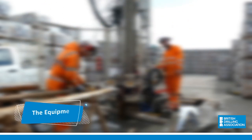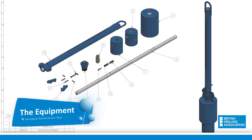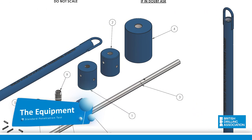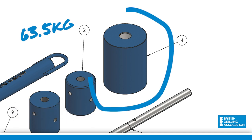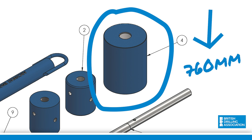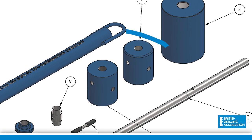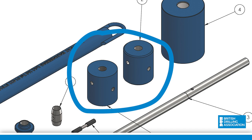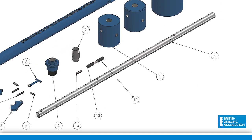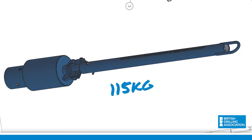Firstly, we will look at the equipment used. The SPT requires a 63.5kg weight to be dropped over a 760mm height onto an anvil. Although the weight that is dropped must be 63.5kg, the entire SPT assembly should not weigh more than 115kg.